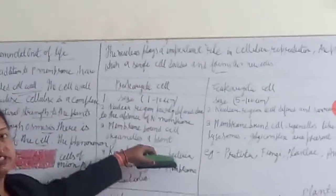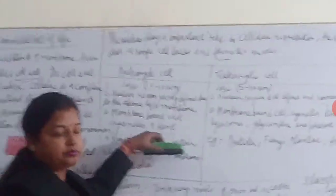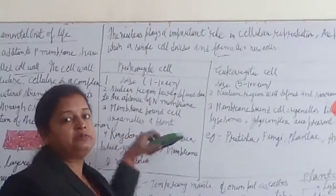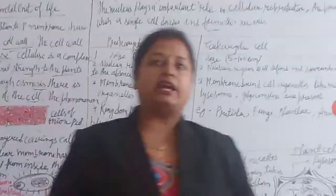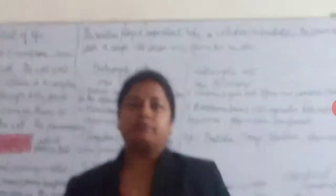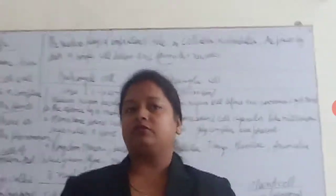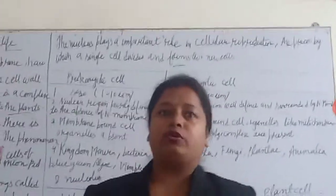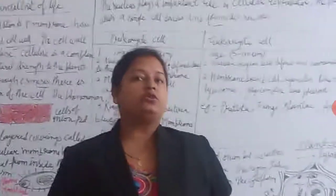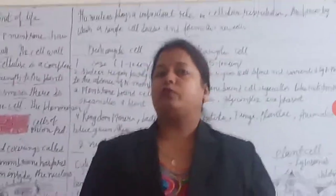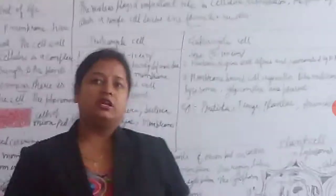In plant cells, we have plastids present. Plastids also contain chromoplasts and leucoplasts. Chloroplasts contain chlorophyll, which is responsible for making food in the plants. The chloroplast makes food with the help of sunlight, air, and water, and provides it to all parts of the plant.